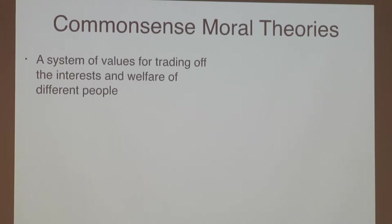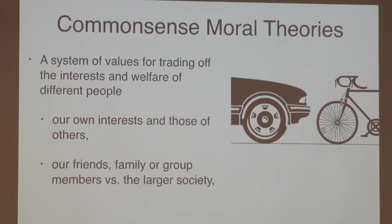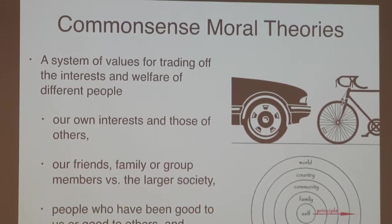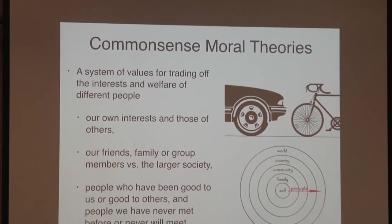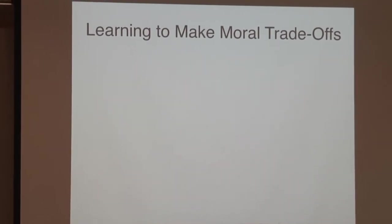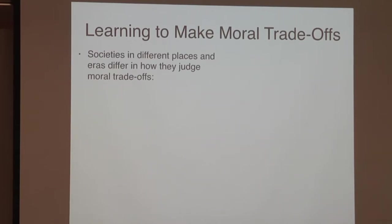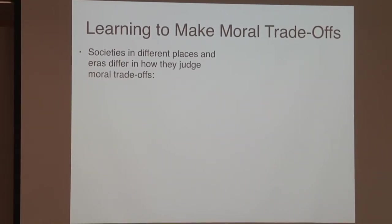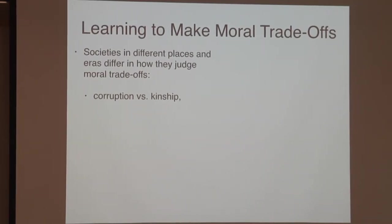Let me start with this idea of a common sense moral theory. It's really a basic system we use every day — how do we trade off the welfare of other people? We have to trade off our own interests and those of others: our friends, family, group, larger society. People who have been good to us and good to others, versus people we've never met. We know that societies in different places and eras have differed in how they judged one should make these moral trade-offs. For example, in some societies nepotism is seen as a type of corruption.